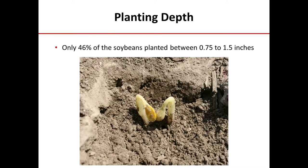One interesting thing when I surveyed growers across the country is that only 46 percent of soybean farmers plant soybeans in the recommended seeding depth range of three-quarters of an inch to an inch and a half. That tells us that 54 percent of growers are either planting their soybeans too shallow or too deep, which can lead to emergence issues as well as variable germination based on soil water capacity and the amount of moisture available for those soybean seeds to imbibe water.